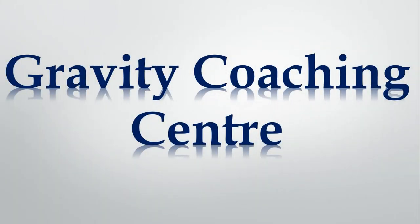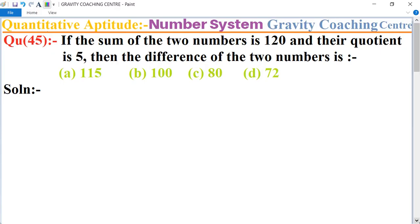Welcome to our channel Gravity Coaching Centre. Quantitative Aptitude, chapter Number System, question number 45. If the sum of the two numbers is 120 and their quotient is 5, then the difference of the two numbers is which one?